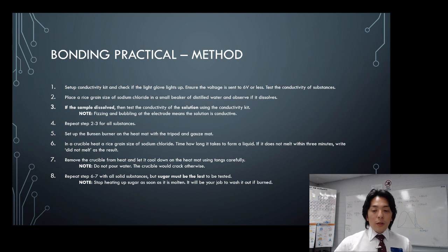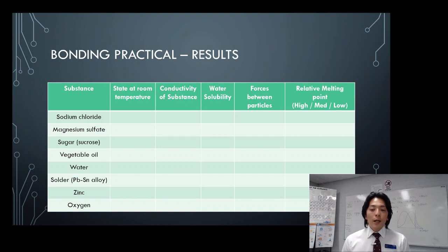Here's a result table and method which I will show you on the screen when you do the prac. Having this result table would be very useful to know what sort of things you'll be looking for. Substances you will have would be sodium chloride, magnesium sulfide, sugar, vegetable oil, water, solder (it's a metal alloy), zinc, and finally oxygen. So you will have that many different substances and you'll be testing their properties.